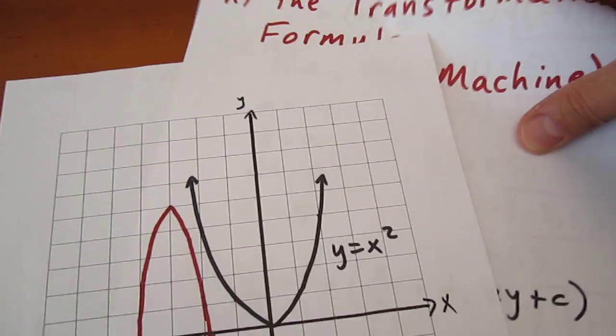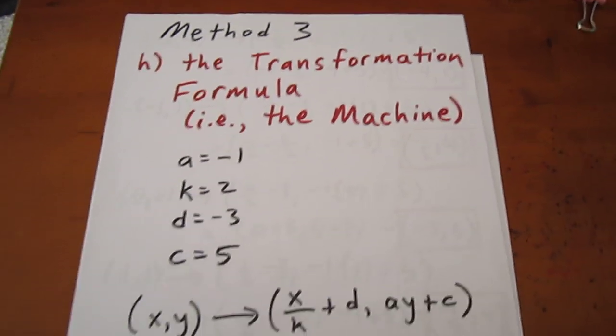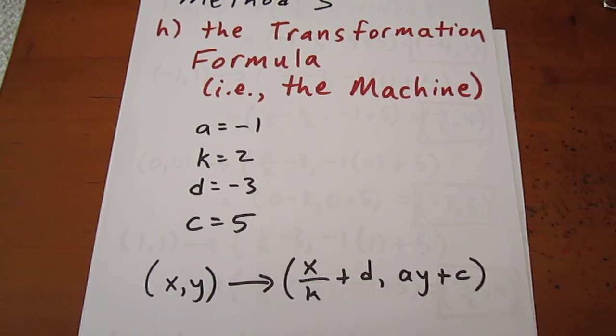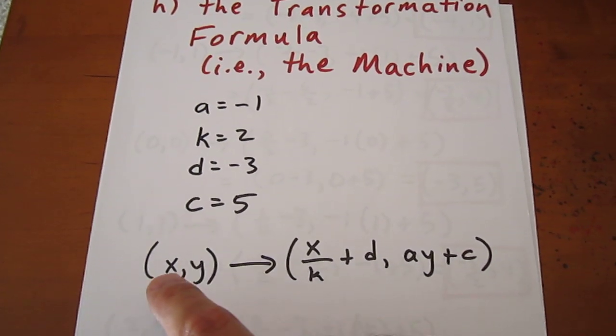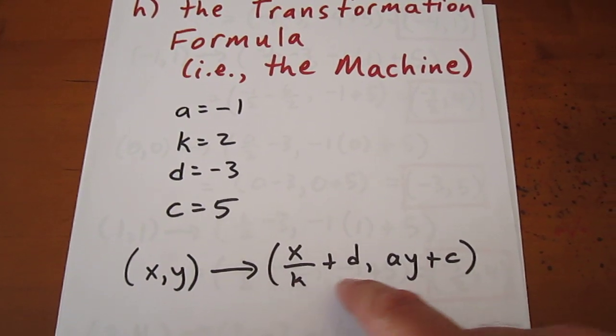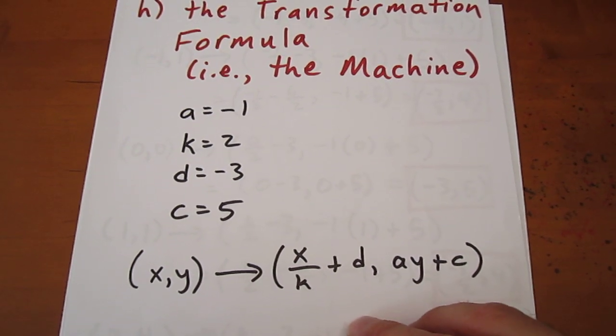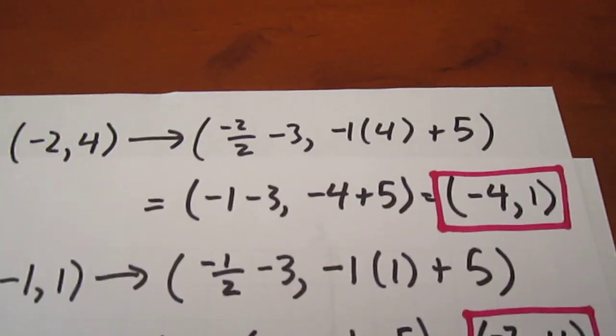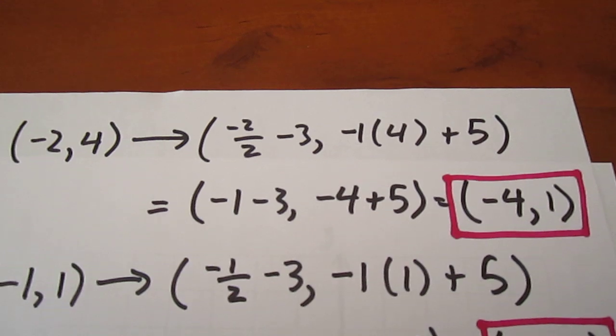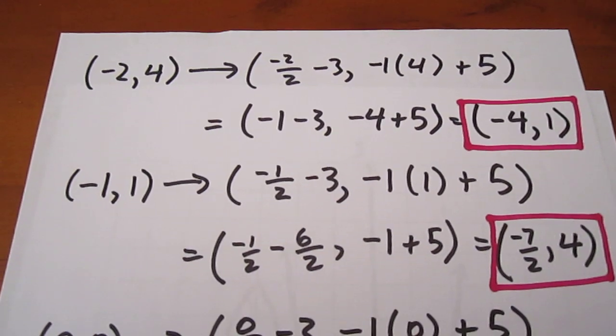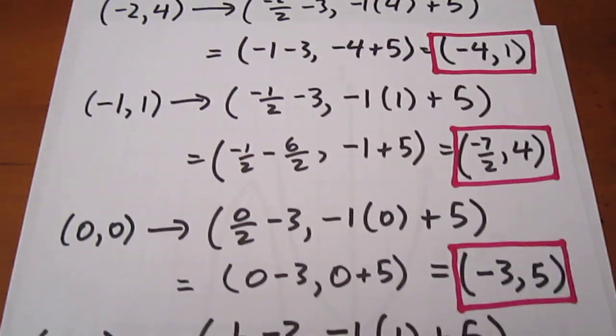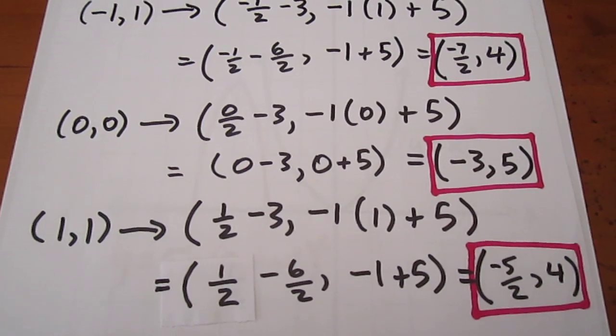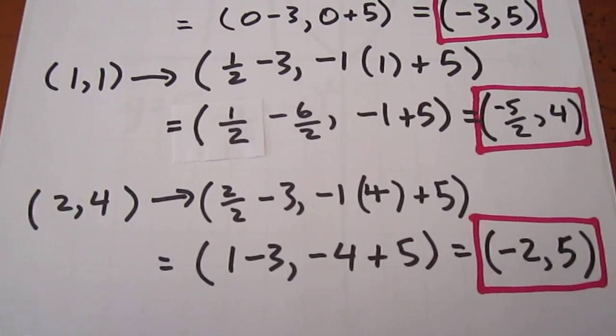Another method of finding those points is what's called the transformation machine, or the transformation formula, which I call the machine. We know that a equals negative 1, k is 2, d is negative 3, and c is 5. Well, every point on the parent function can be put through this machine, and the new image points come up automatically. So negative 2, 4 becomes negative 4, 1. Negative 1, 1 becomes negative 7 halves 4. 0, 0 becomes negative 3, 5. 1, 1 becomes negative 5 halves 4, and 2, 4 becomes negative 2, 5.